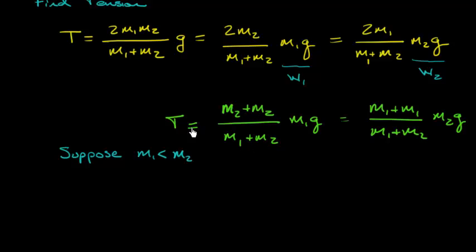Well, the numerator, since mass of two is bigger than mass of one, the numerator is going to be bigger than the denominator, right? So, this little piece right here has to be bigger than one. That's supposed to be a one. It doesn't look great for a one. There we go.